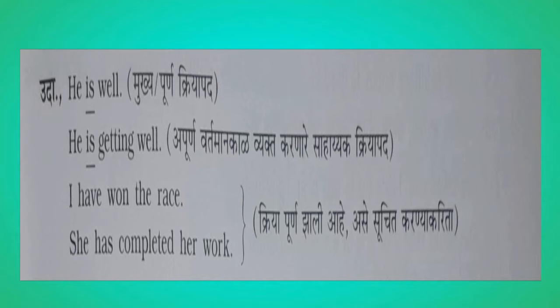Now let's see one more example: 'He is getting bail' — the underlined word is 'is'. One more example: 'I have won the race.' 'She has completed her work.' So in these two examples, to indicate that the action is completed, Have and Has are used.